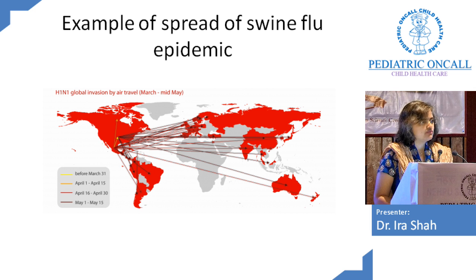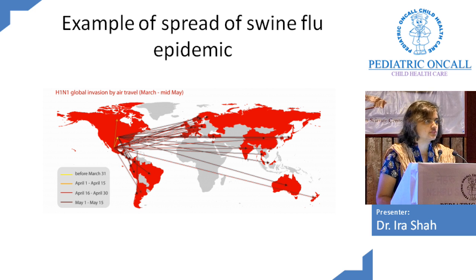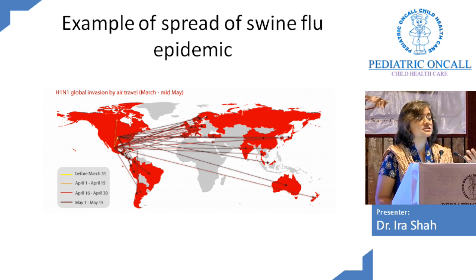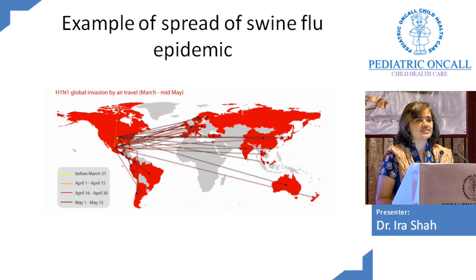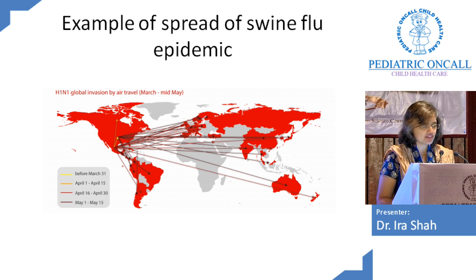Influenza is one of the commonest travel infections we're going to land up with. Most of us are just going to land up with a URTI. We are not really going to think about asking a patient who comes with a URTI whether they traveled abroad — until it becomes a real epidemic and then we're panicking, giving Oseltamivir to every patient with a URTI. That's one aspect of travel infection that really panicked us.